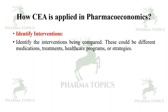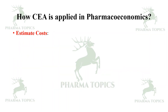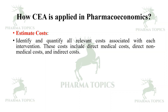How is CEA applied? Identify the interventions being compared — these could be different medications, treatments, healthcare programs, or strategies. Define and quantify the health outcomes associated with each intervention — these could be changes in clinical markers, disease progression, quality-adjusted life years, life years gained, symptom relief, or other relevant health measures. Then estimate the costs — identify and quantify all relevant costs associated with each intervention, including direct medical costs, direct non-medical costs, and indirect costs.